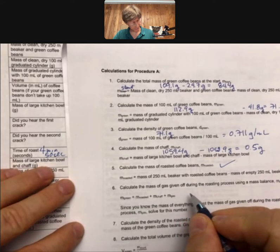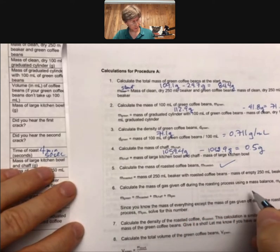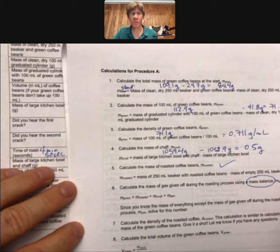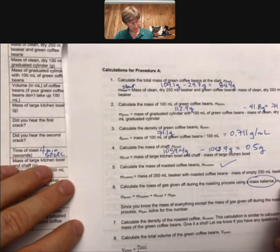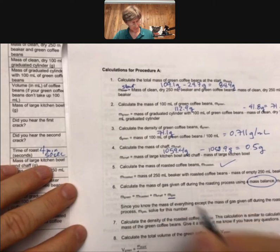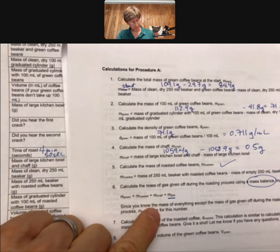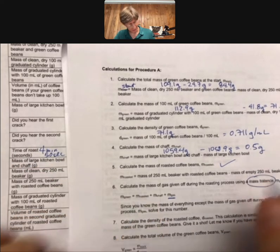Mass of gas given off during the roasting process using a mass balance. Woo-hoo! Our mass balance. And gas. So we don't know this, but we do know the mass of our chaff. It's 0.5 grams.